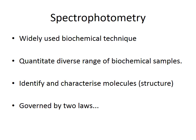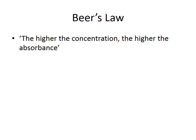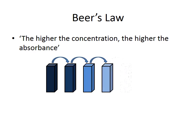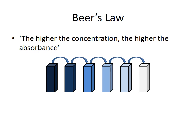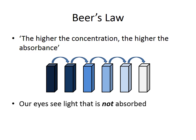Spectrophotometry is governed by two laws. The first is Beer's Law, which states that the higher the concentration the higher the absorbance. We can represent this visually using a dilution series. On the left-hand side there is a very deep blue color representing a very concentrated sample, meaning not a lot of light will pass through because it will be absorbed. As you dilute the sample moving from left to right, the intensity of the blue color drops, so more and more light is able to pass through, until ultimately you reach a near colorless solution on the right. Our eyes are actually seeing the light that is not absorbed — these are the colors reflected back to us.